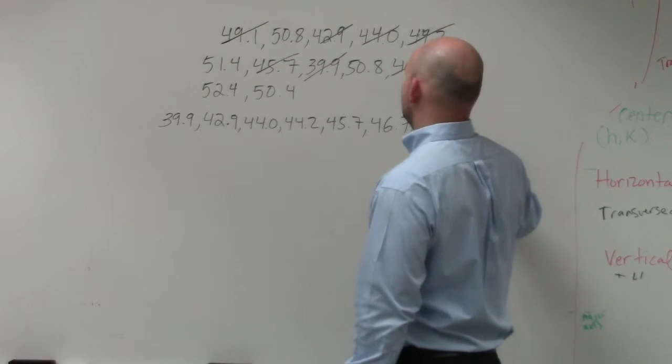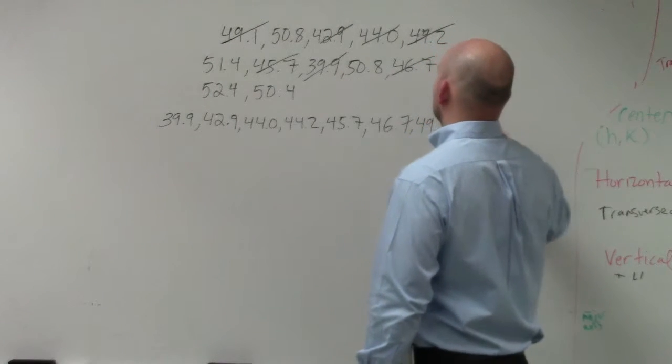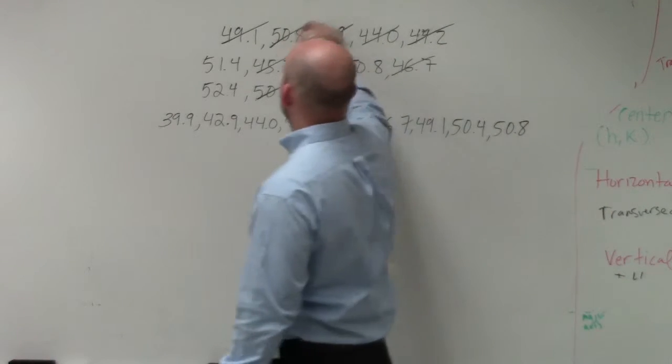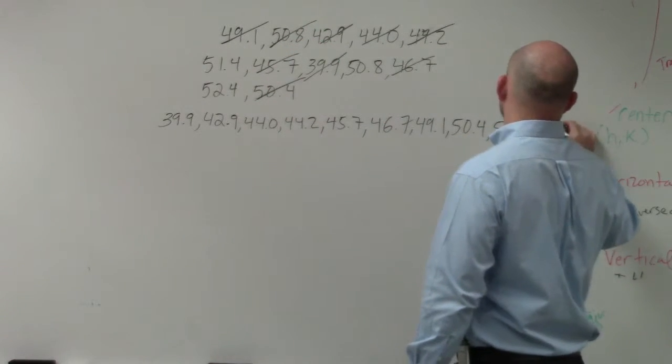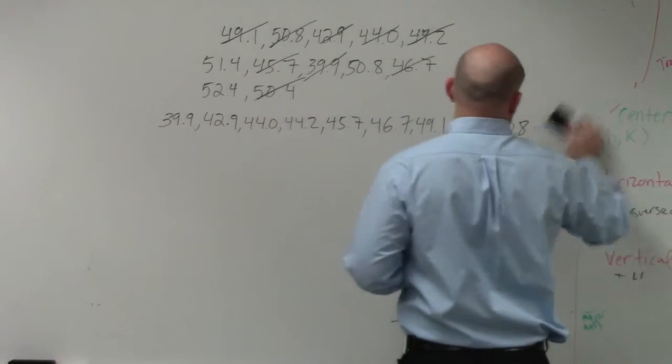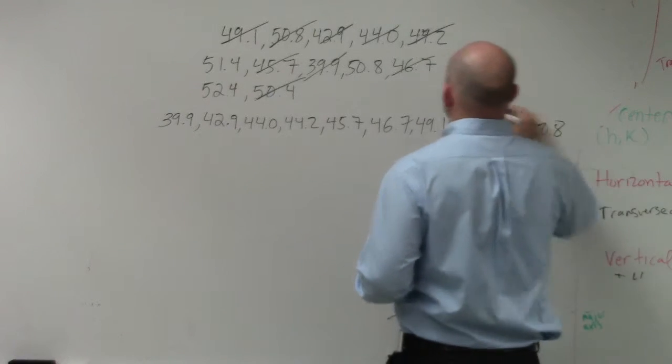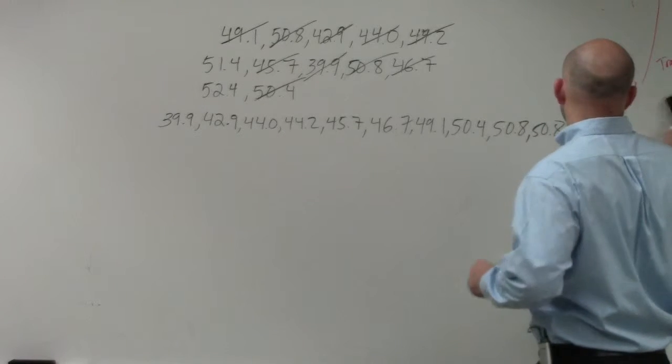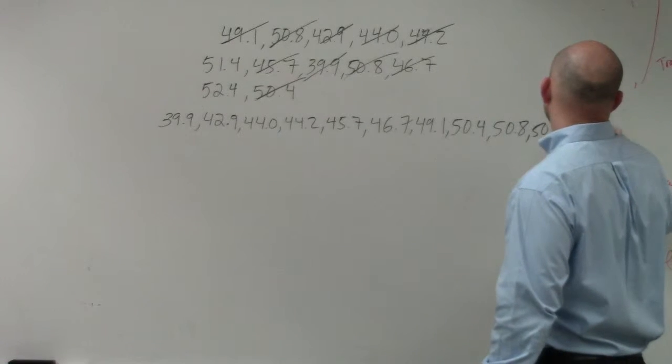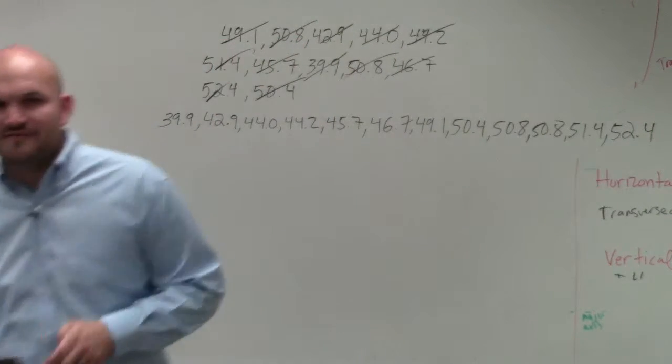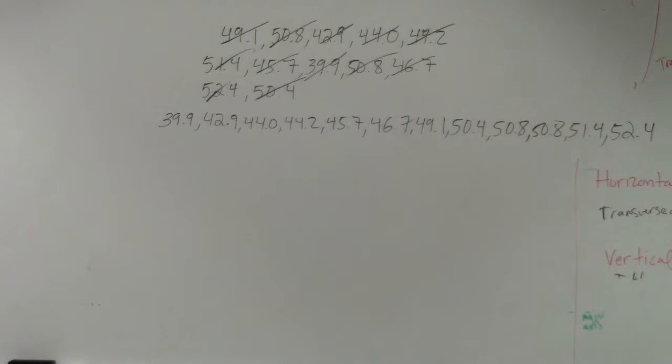Then I have 50.4, 50.8, 51.4, and oops, I forgot 50.8, right? Two 50.8s. 51.4, which I'm now starting to get off, 51.4, and then 52.4. Does everybody follow me how I arranged the data set there? Does everybody see that?